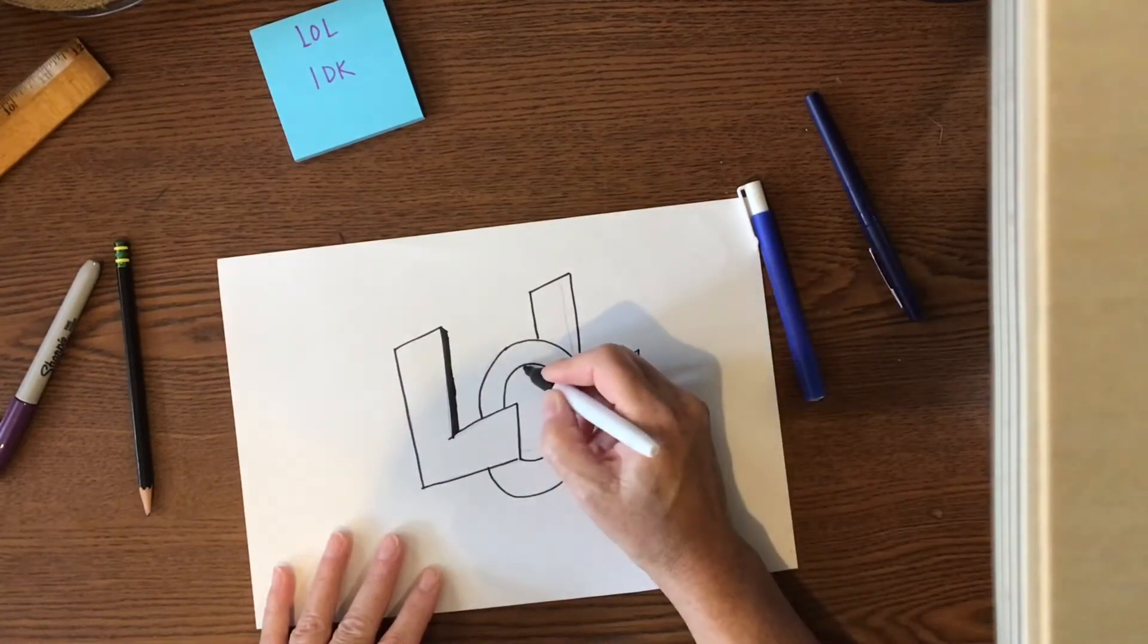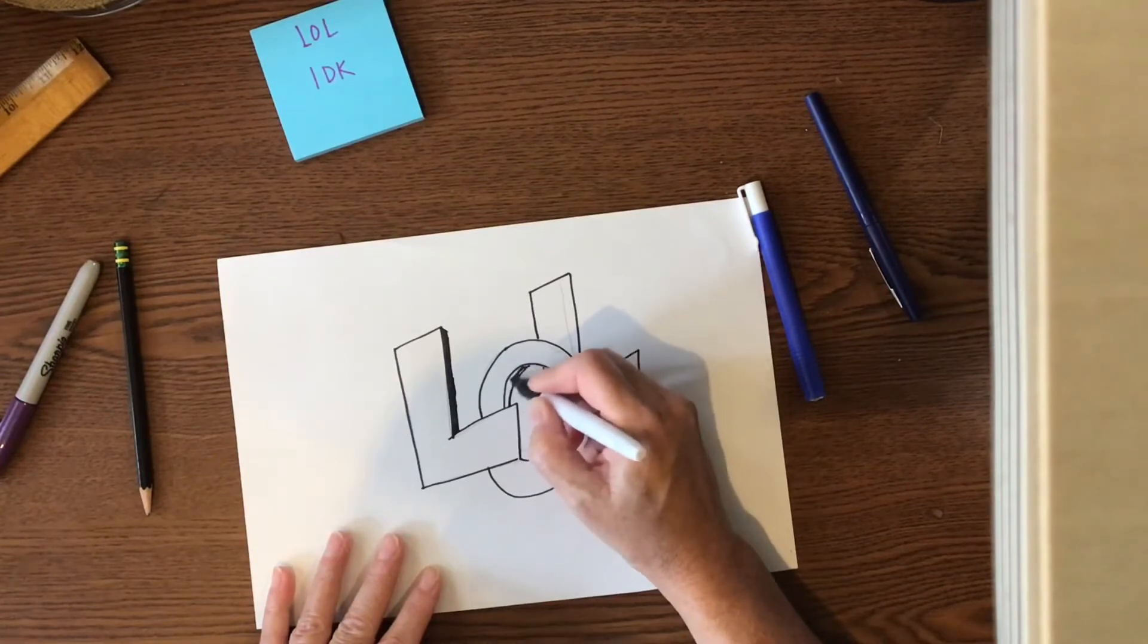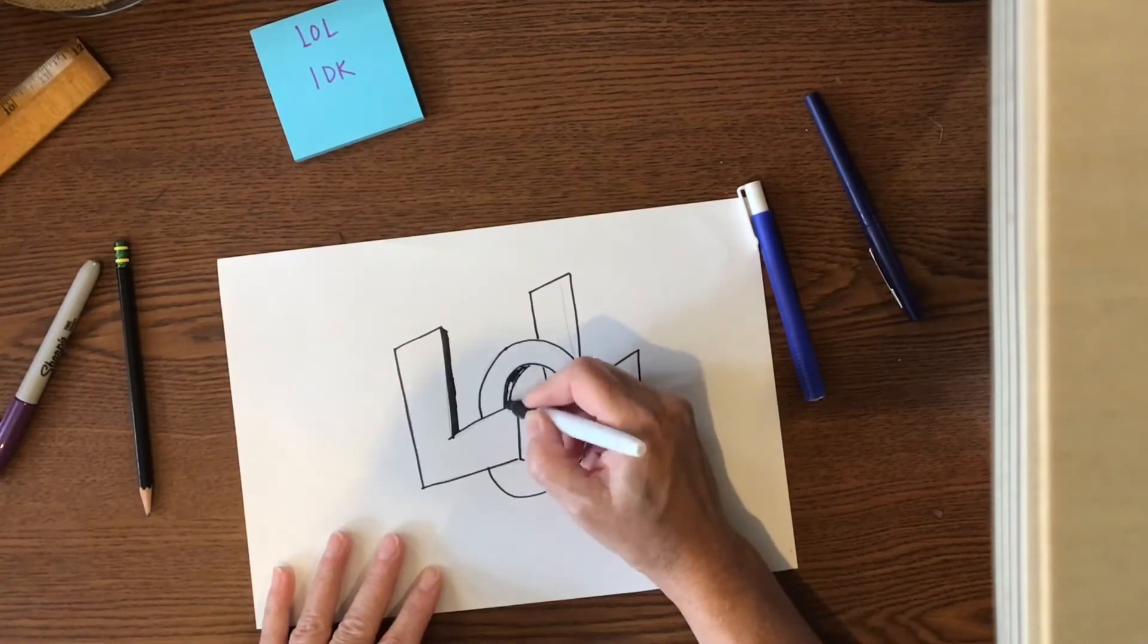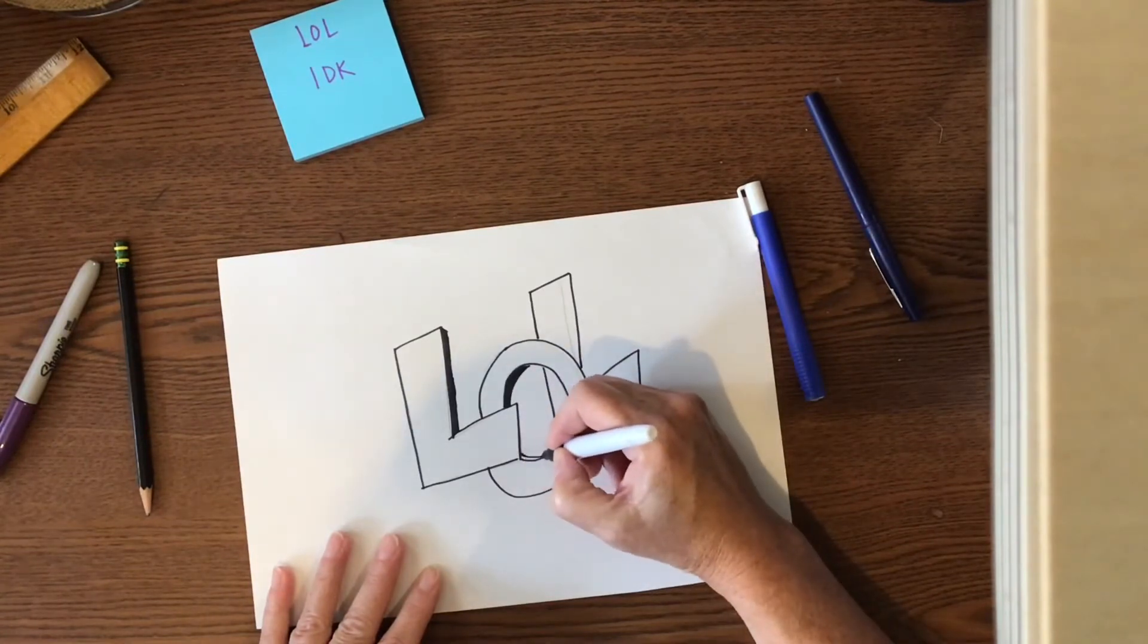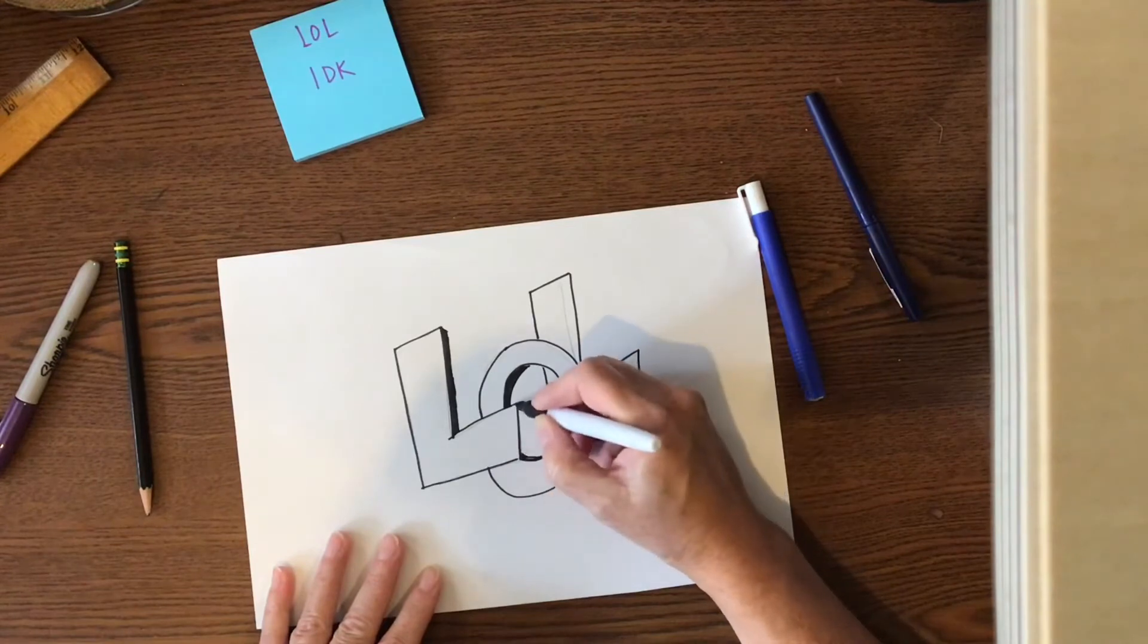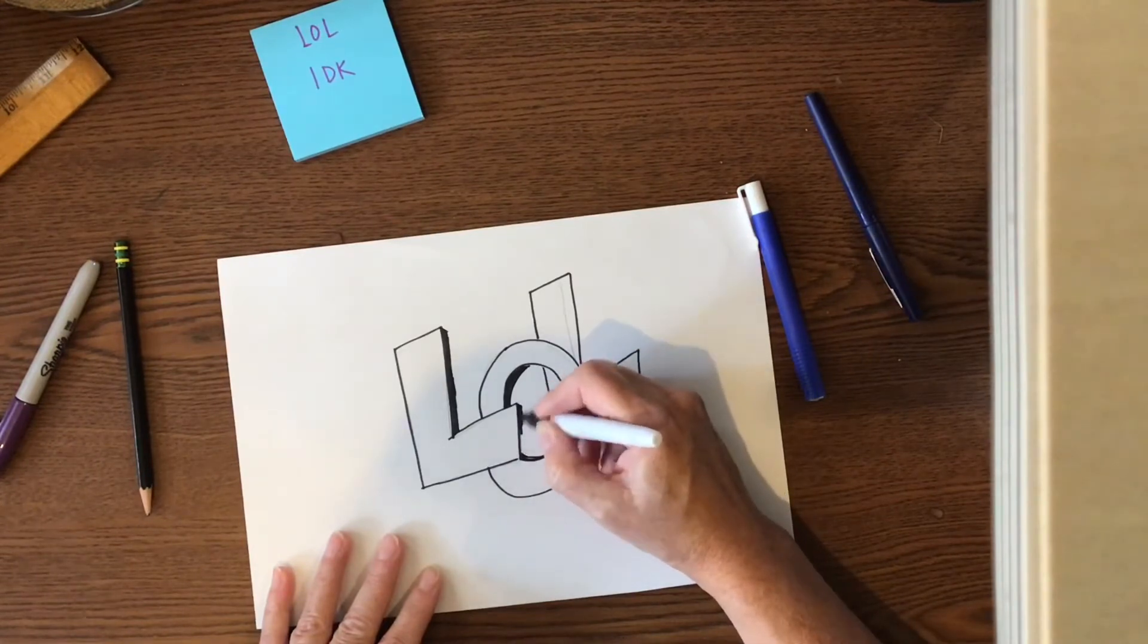And then I know right here on the inside of my O, I'm going to have a little shadow in there. It's only going to be on one side. And then it's going to come out just a little bit behind there, but I'll also have an edge. This L will have a little bit of a shadow too.